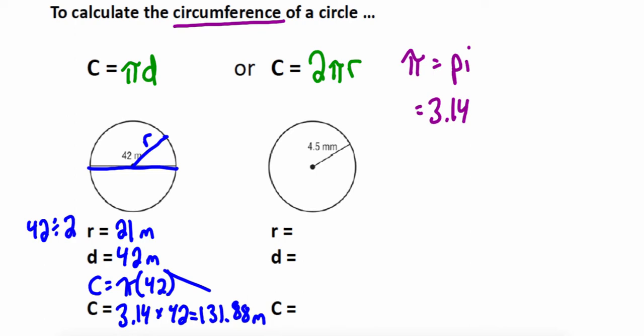Let's try this next one. 4.5 is the radius. It's just halfway across our circle, so it's 4.5 millimeters. Remember the diameter is the distance all the way across. So it's 4.5 and another 4.5, or 4.5 times 2, which is 9 millimeters because the diameter is twice the distance.